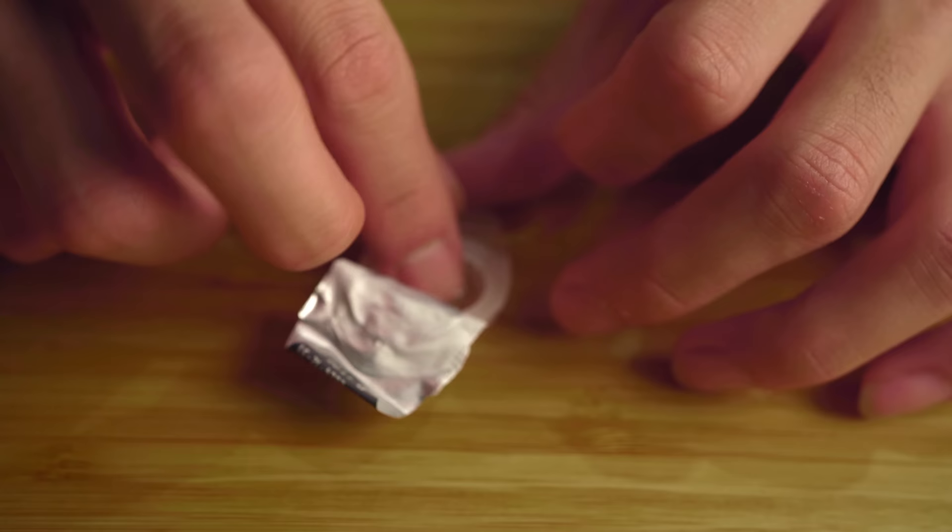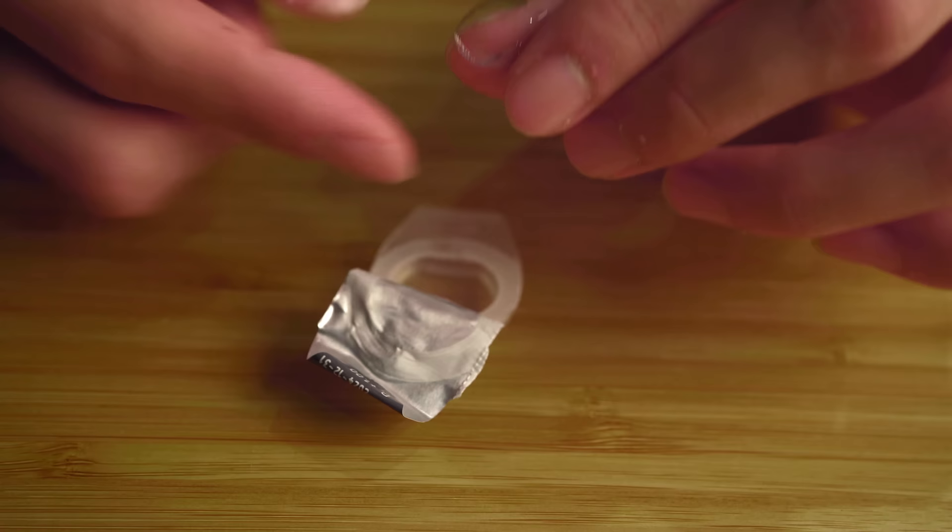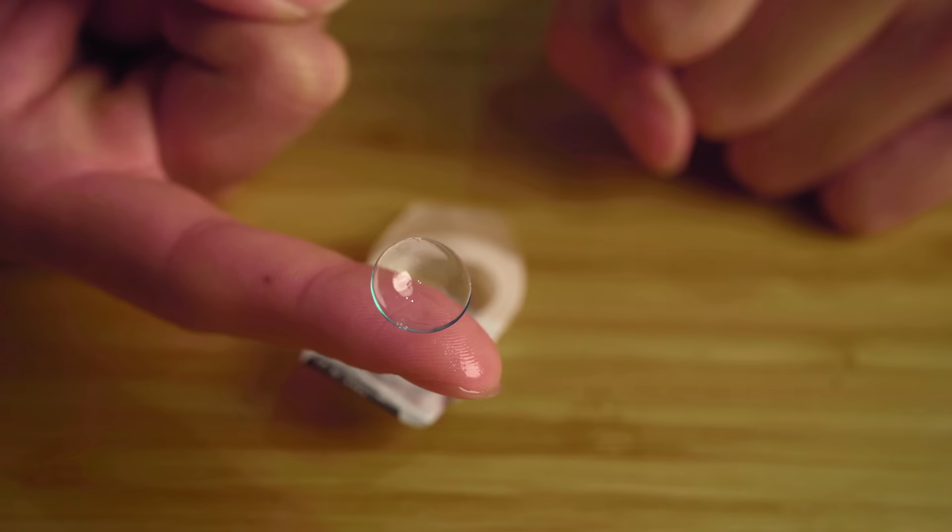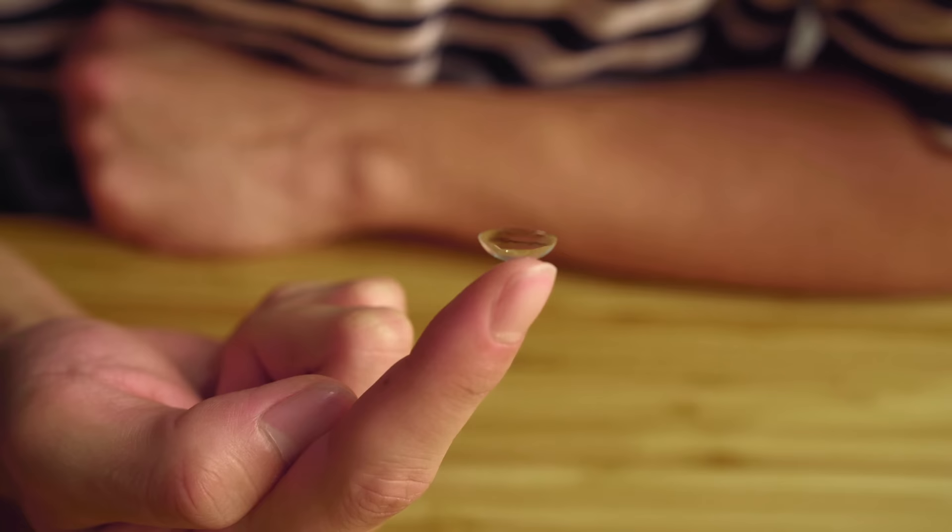Step two, the taco test. Scoop the lens out of the solution and lay it down onto your index finger. Try using the same sided hand as the eye you're about to put the lens into. So for example, we're going to be doing the right eye first, so we will use our right index finger.